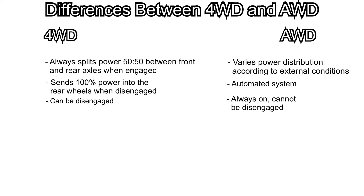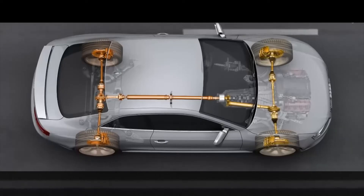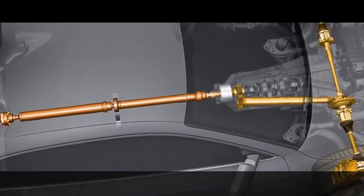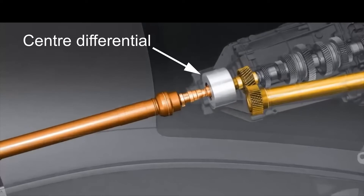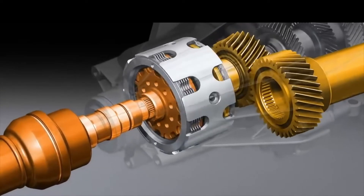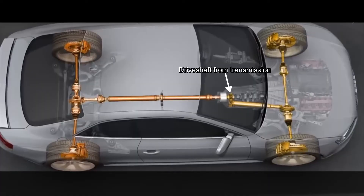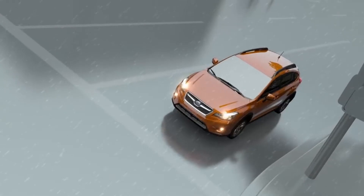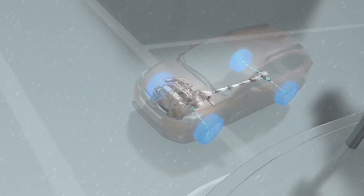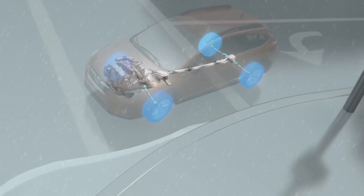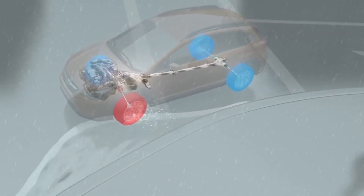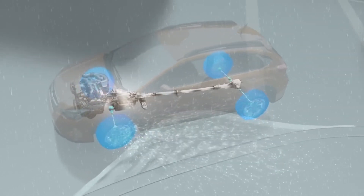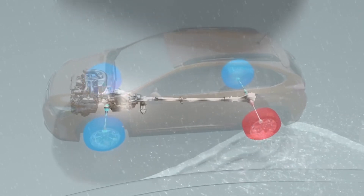All wheel drive is an automated system that distributes power according to how much grip or traction each tire has. For this reason, all wheel drive is always on and cannot be disengaged. Unlike a four wheel drive vehicle that uses a transfer case, an all wheel drive system uses a center differential to distribute power from the transmission between the front and rear axles. The system normally comes equipped with a series of sensors that detect how much traction each wheel has at any given point, and a computer calculates how much power to send to each wheel based on the traction deficit.